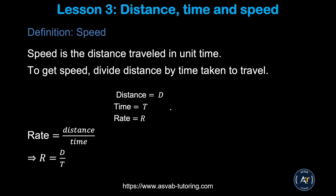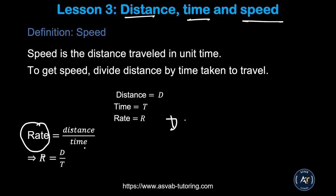The next thing we learn is a very important concept: how to find distance, time, and speed. Speed is the distance traveled in unit time. Say you are driving from New York to Washington D.C., which is around 280 miles, and it takes 5 hours — how fast you drove is called speed or rate. To find rate, you use the formula: Rate equals Distance over Time, or D equals R times T. Remember this formula — you need it for many problems, and also for mechanical comprehension on the ASVAB or ASTB.